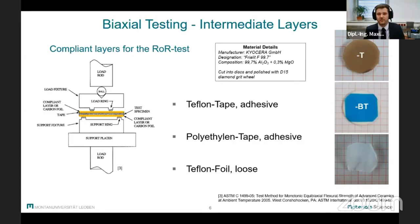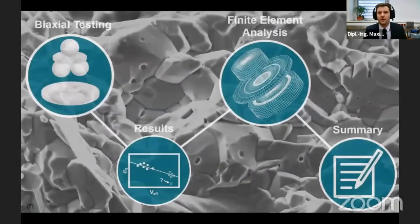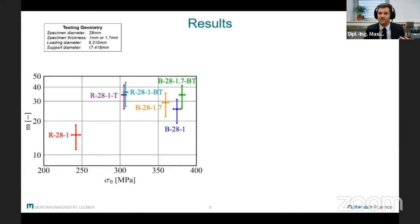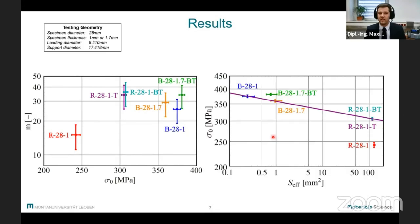Let's have a look at the results and see if we can actually compare the two methods. Here you can see the Weibull parameters for each data set on the left, and here are the characteristic strengths in dependence of the effective surface to the right. You can clearly see the difference in effective surface between the two methods over here, which is about two orders of magnitude. Now if we fit this data, we can see that if the fitted Weibull modulus is about 30, it is in very good agreement with most of the single Weibull sets over here.